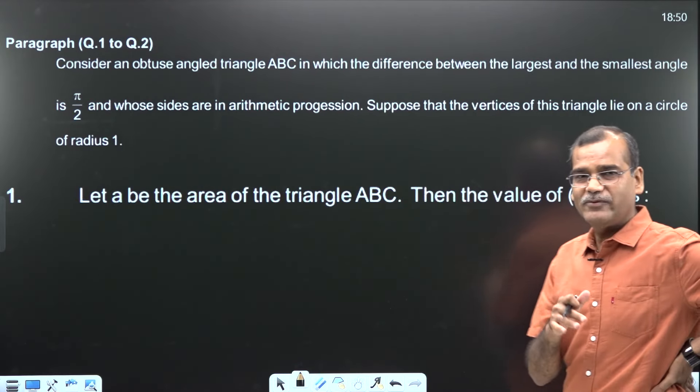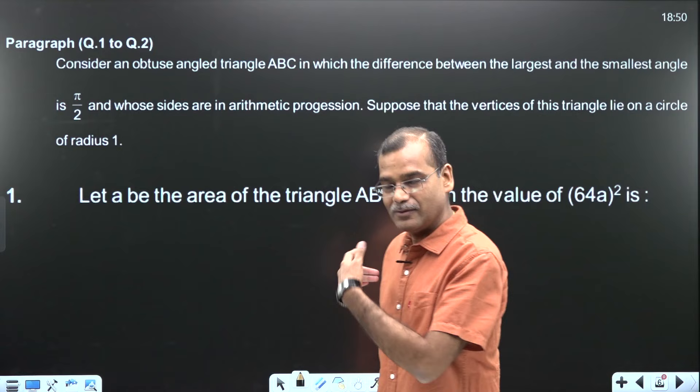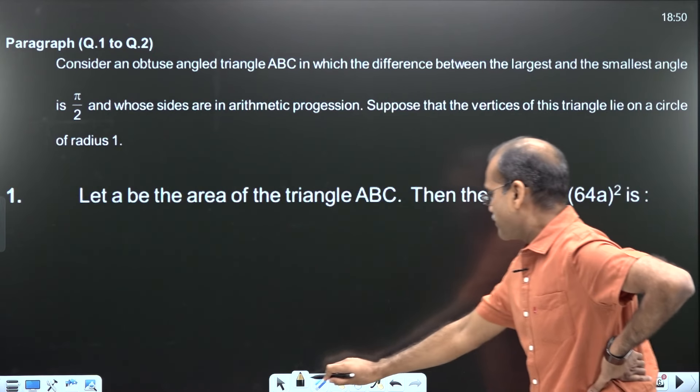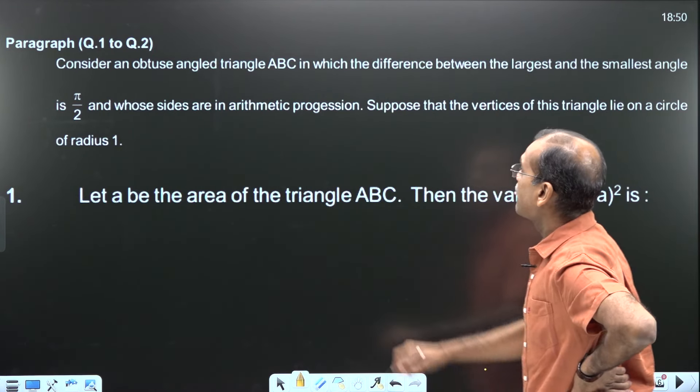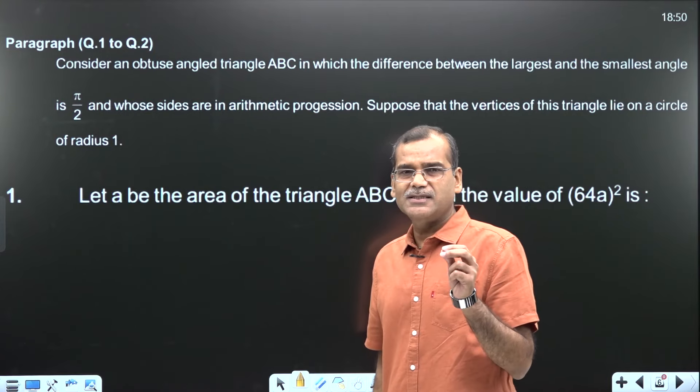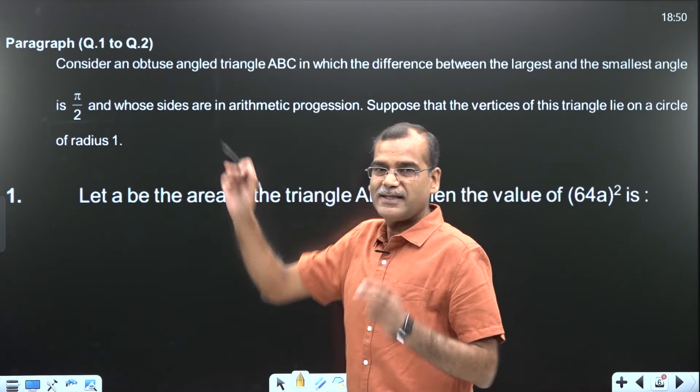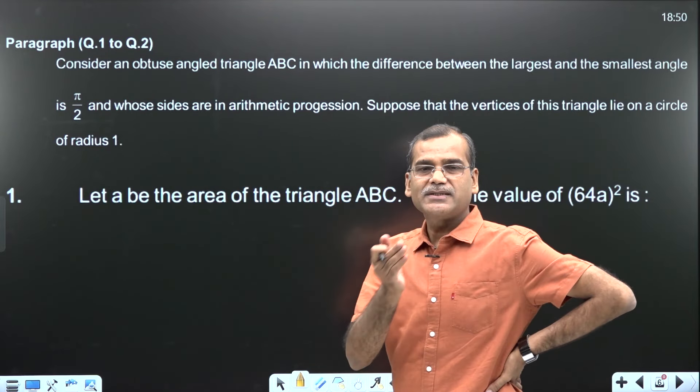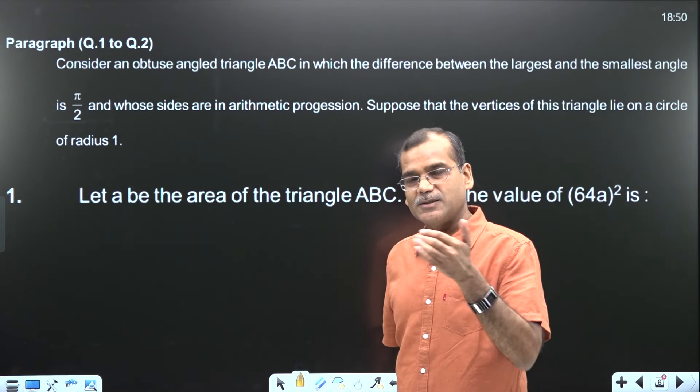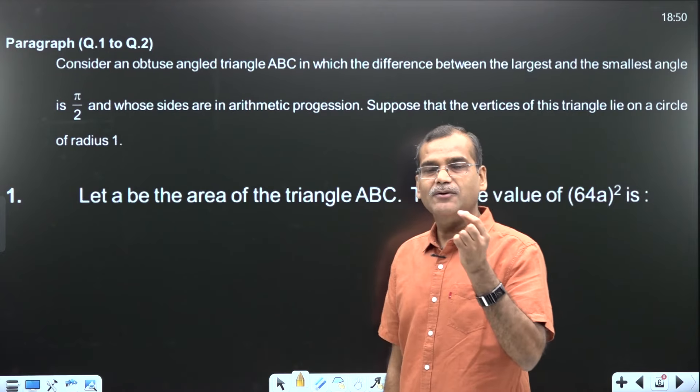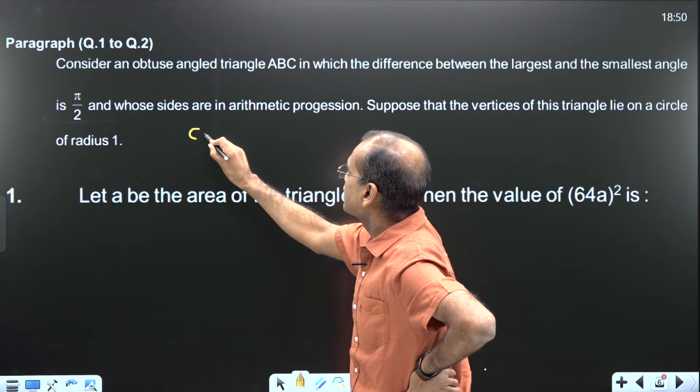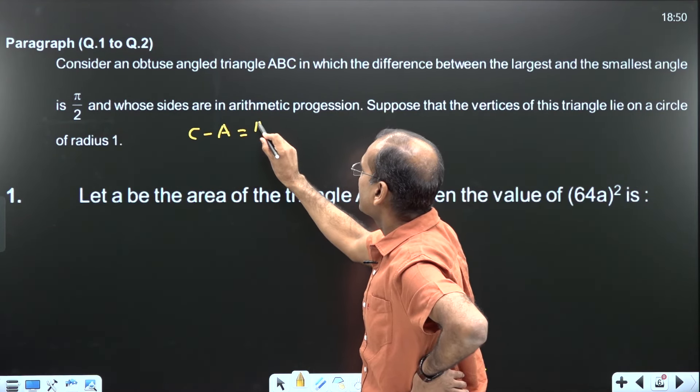You have to pause the video and attempt the solution. Let me continue with the solution directly. Triangle's sides - I will use my notation, small a, small b, small c. You understand that these are opposite sides to angles. So if small a, small b, small c are in arithmetic progression, I have assumed that your smallest side is the smallest one. So capital A is the smallest angle and capital C is the largest. We are given C minus A equals pi by 2.